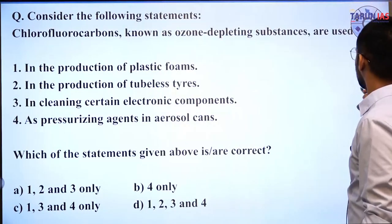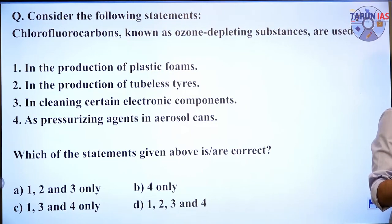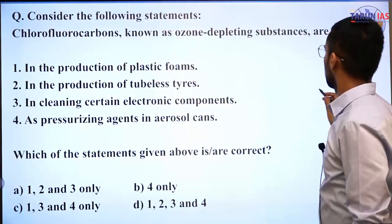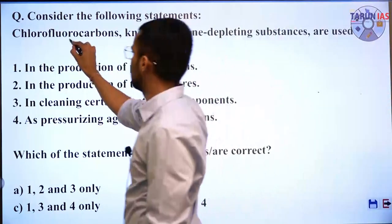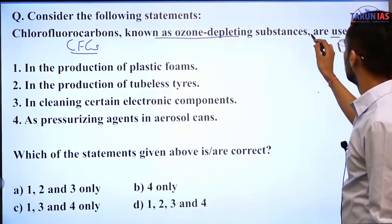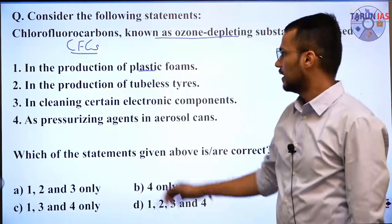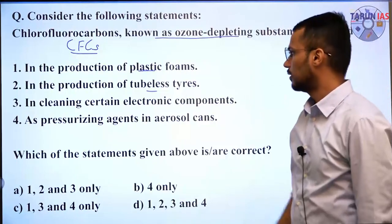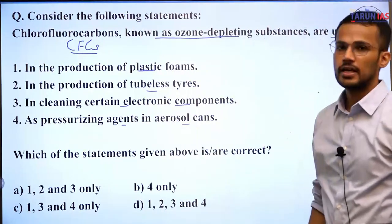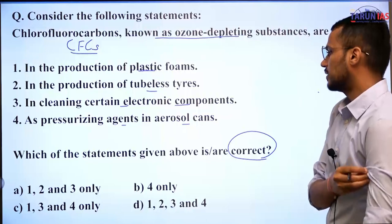The next question: chlorofluorocarbons (CFCs), known as ozone depleting substances, are used for — first, production of plastic foams; second, production of tubeless tires; third, cleaning certain electronic components; fourth, as pressurizing agents in aerosol cans. You have to select the correct uses of CFCs. CFCs are ozone depleting substances, and the most popular use was in refrigeration — though now hydrofluorocarbons (HFCs) have replaced them, as HFCs are not ozone depleting substances.